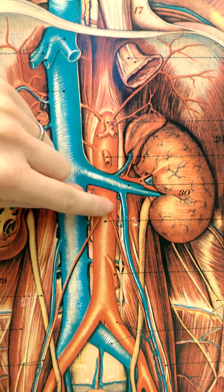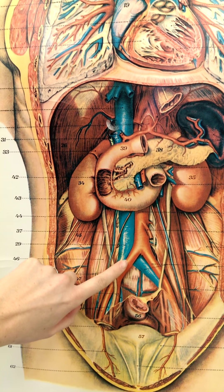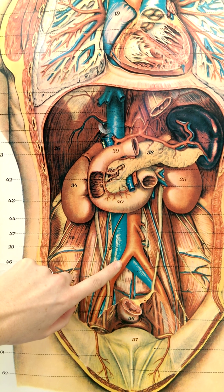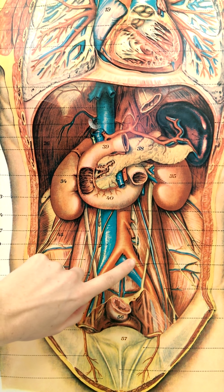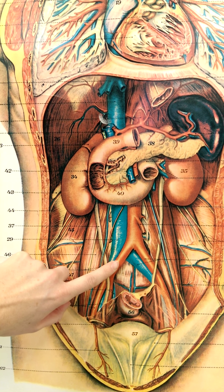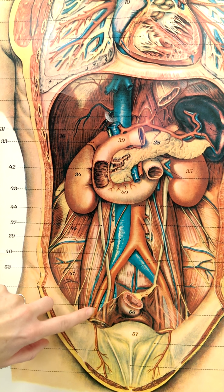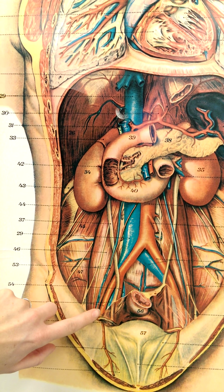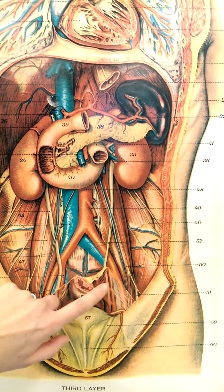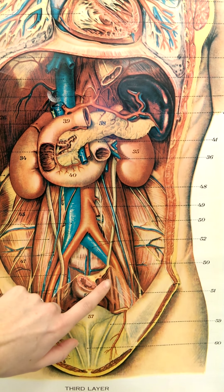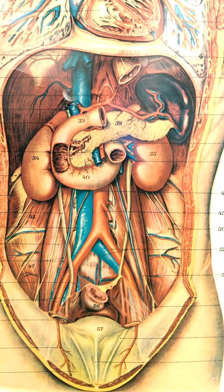Continuing inferiorly, I see that my abdominal aorta splits or bifurcates, giving off two common iliac arteries. Each common iliac artery splits again, giving me an external iliac artery, which goes down to supply the lower limb, and an internal iliac artery, which goes into the pelvis. I see the same thing on the other side, although it's hard to see with this peritoneal membrane in place.